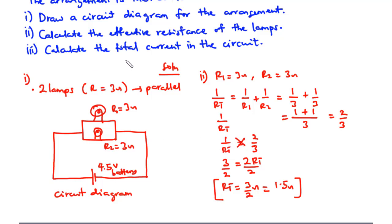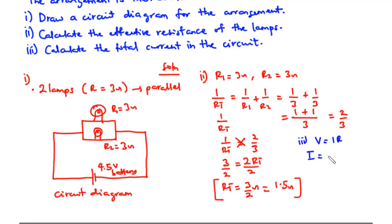For part iii, we calculate the total current in the circuit. From Ohm's law, V = I × R, so current I = V/R. The voltage is 4.5 volts and the effective resistance is 1.5 ohms. Therefore I = 4.5 / 1.5 = 3 amperes. This is the total current in the circuit.